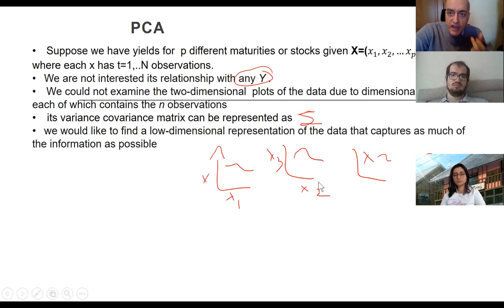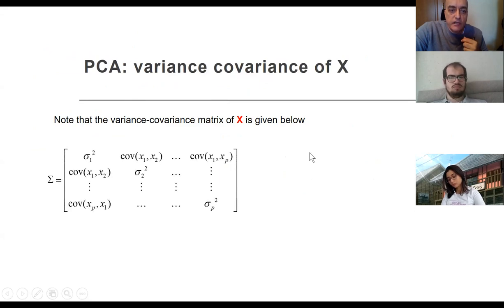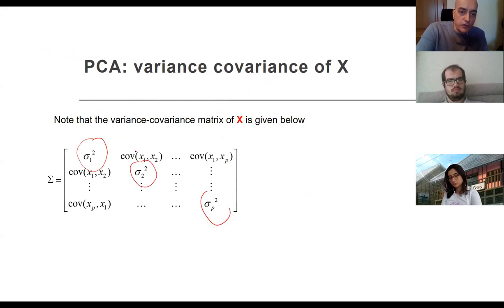What we are after is that total variability of X as a whole can be captured, but while you're doing that whole variability you don't really need P dimensions of it. Rather a dimension less than P will be helpful to explain as much information as possible by reducing this dimension of P.